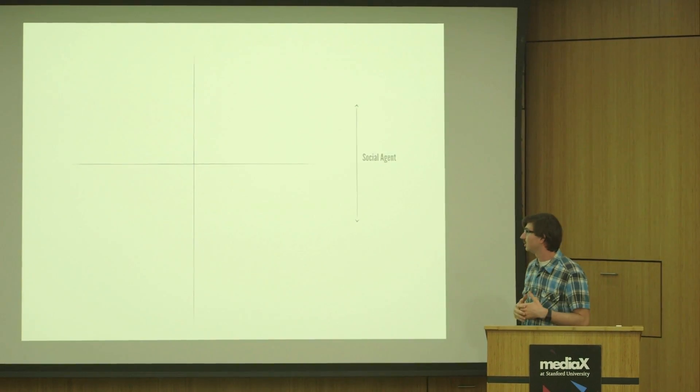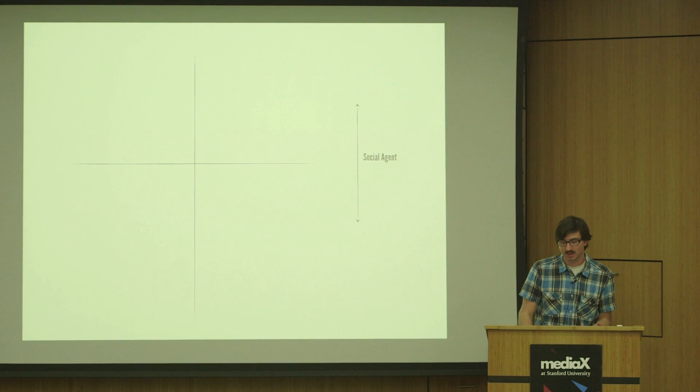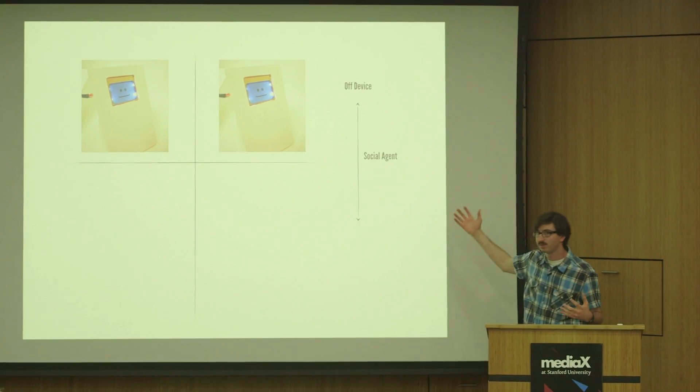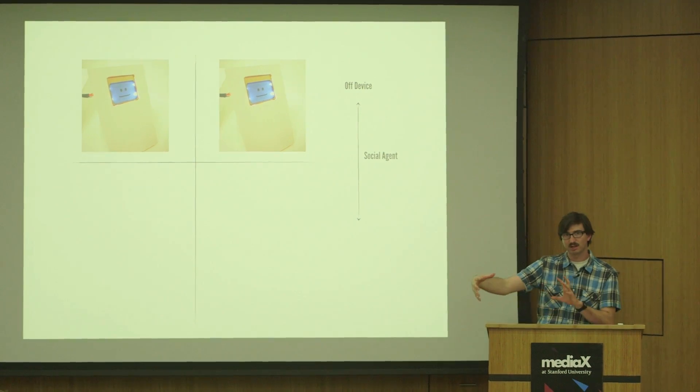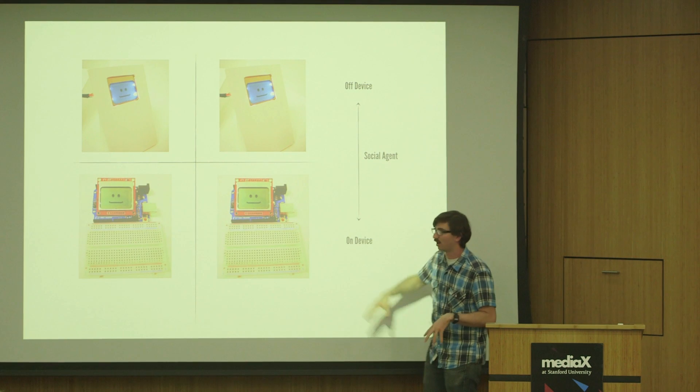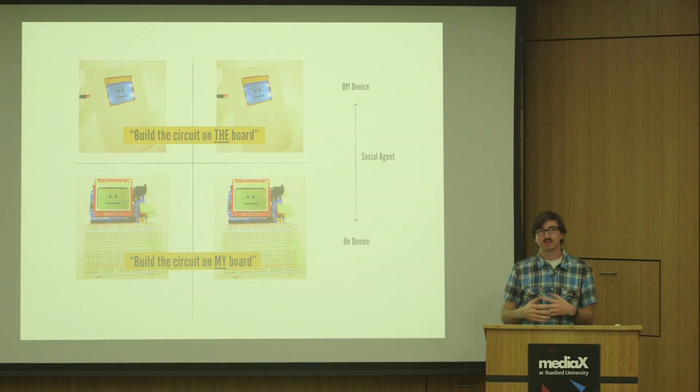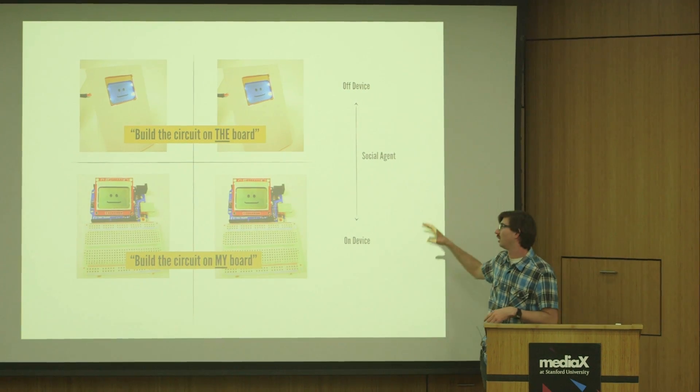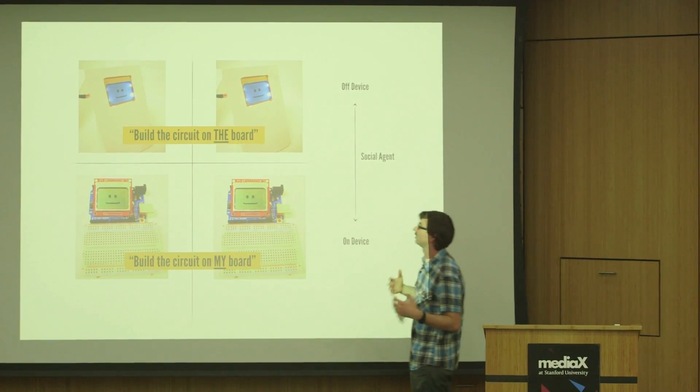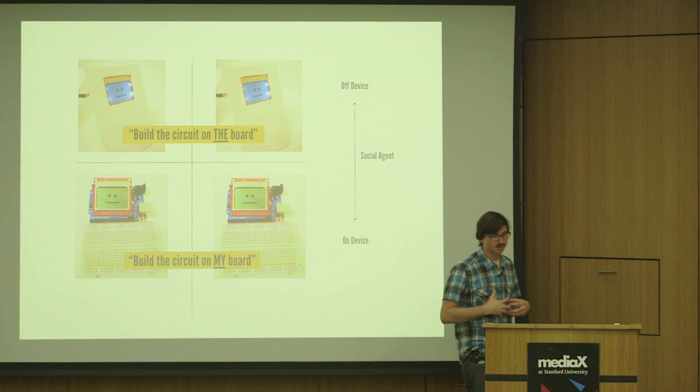So what we're interested in is actually looking at a couple of different areas of how we might design such objects. So the first axis was on the social agency, the difference between an off-device, imagine a robot off to the side teaching you, versus on-device. So the actual device itself was an interactive agent. And the way that we manipulated this, aside from the physical manifestations of the devices, was also through some verbal cues. For example, saying things like, build the circuit on the board, versus build the circuit on my board. So a reference to the self.